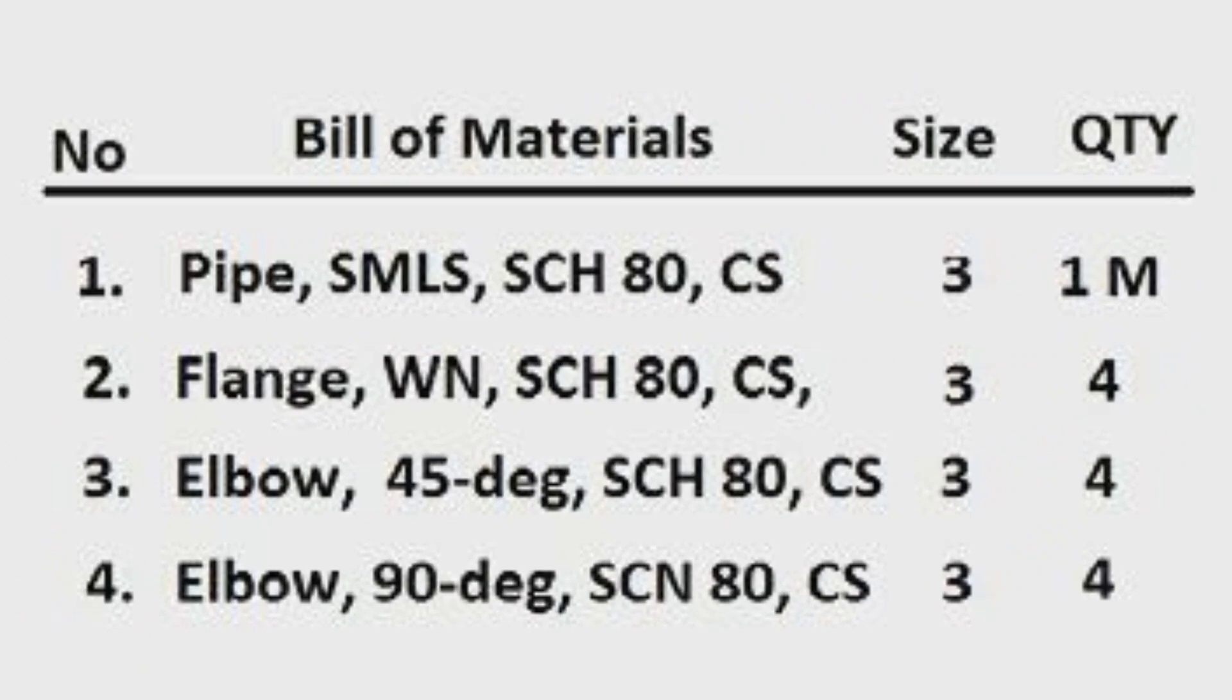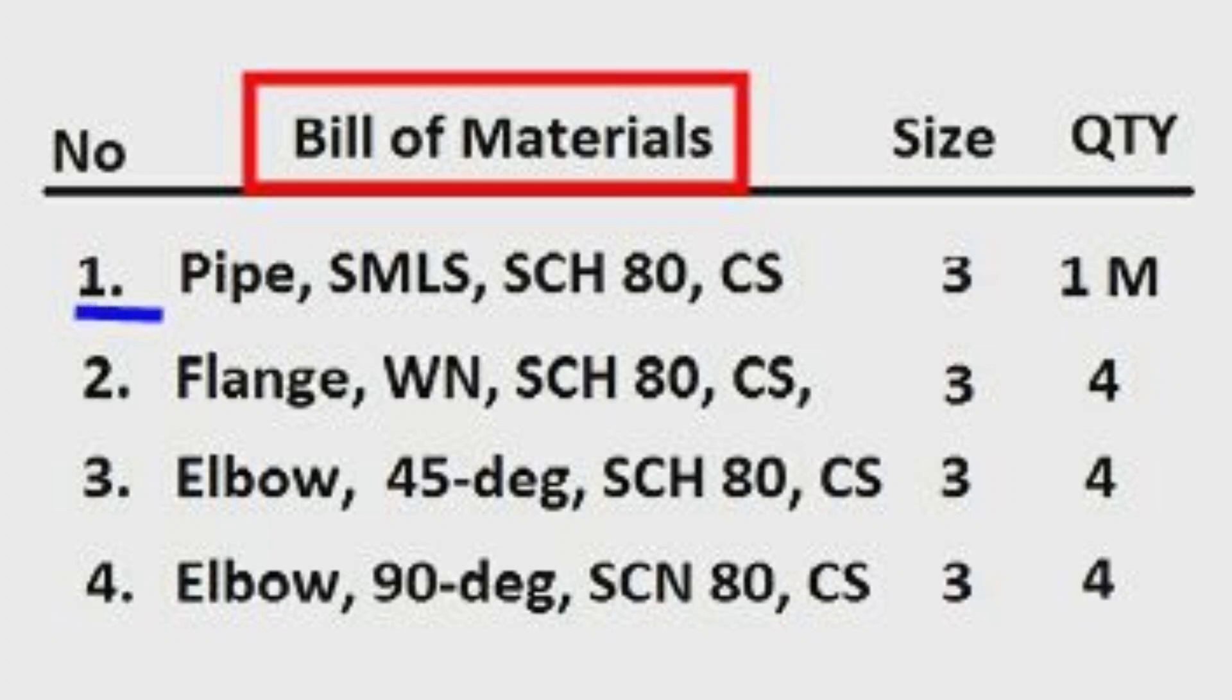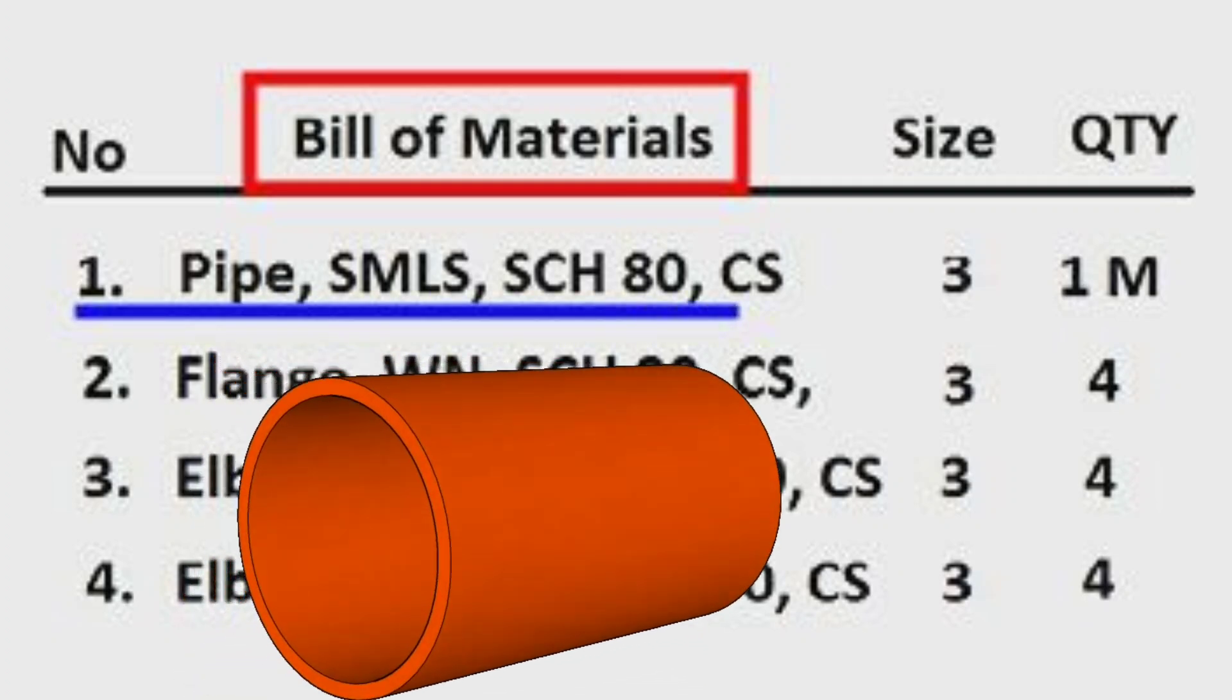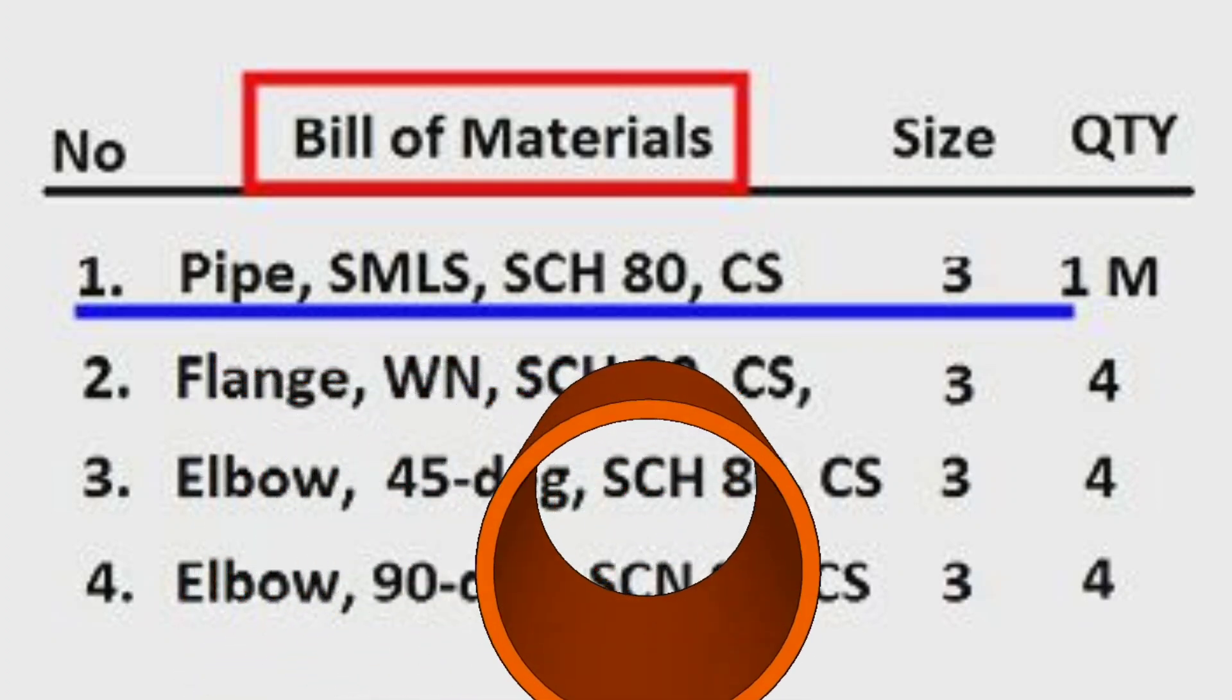This is bill of materials. The detail number one, pipe, seamless type, wall thickness schedule 80, carbon steel material, size is 3 inches, the quantity total is 1 meter.